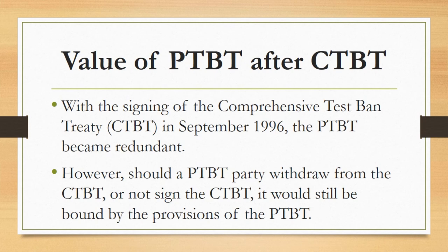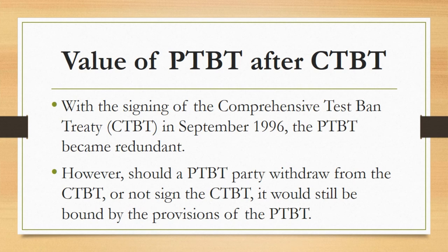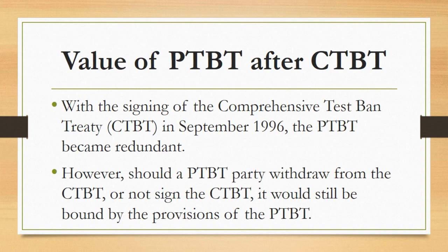Now, what is the value of PTBT after CTBT? PTBT is the Partial Test Ban Treaty, which allows nuclear tests underground only. Whereas CTBT — the Comprehensive Test Ban Treaty, as studied in our previous lecture — restricts testing of nuclear weapons everywhere, including underground. With the signing of CTBT in September 1996, the PTBT became redundant. However, should a PTBT party withdraw from the CTBT or not sign the CTBT, it would still be bound by the provisions of PTBT.